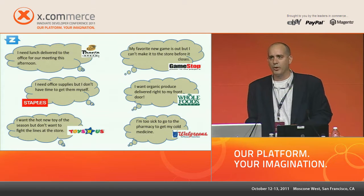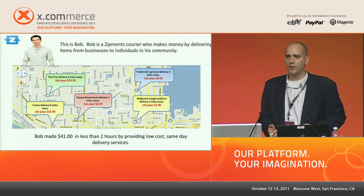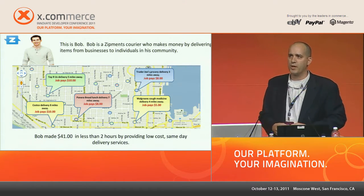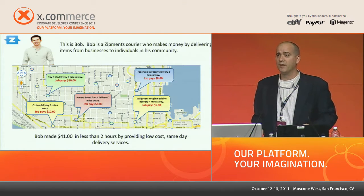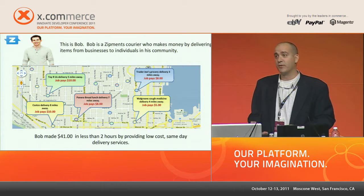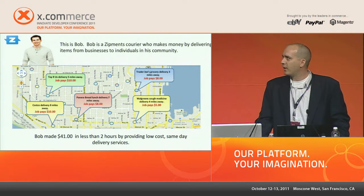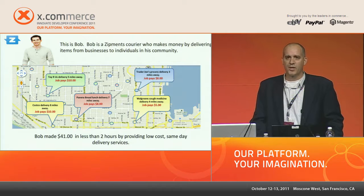We want immediacy and convenience. What Zipments is really designed to do is provide that through a crowdsourcing delivery model. We're in Grand Rapids, Michigan, and also have presence in LA, Chicago, and New York, and we're expanding. We find folks willing to provide same-day delivery services from businesses to individuals. This is an example of one person who can make pretty good money at a time when our economy is struggling — many people are doing contract work or starting their own businesses. Zipments provides solutions to people who want to work on their own time and terms.